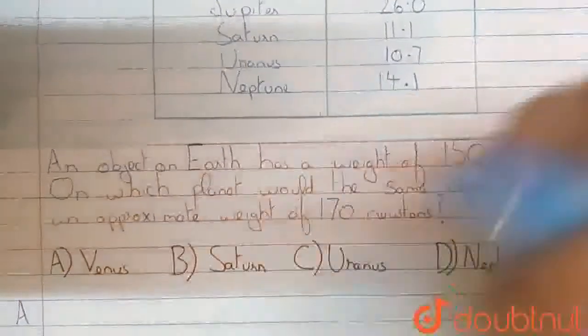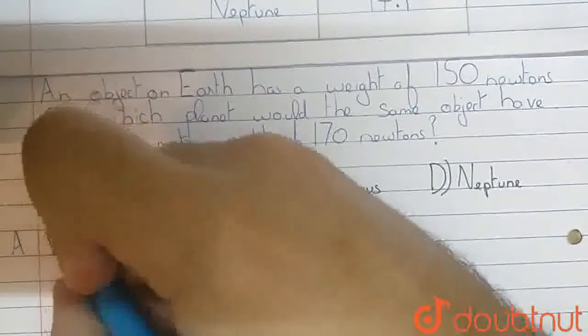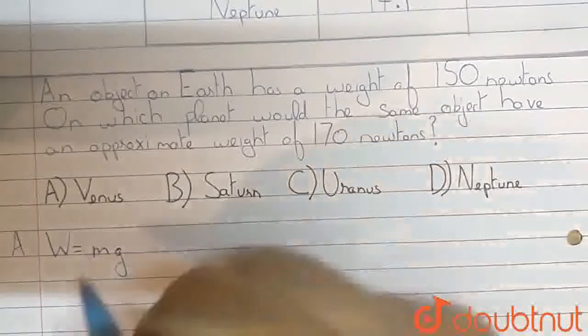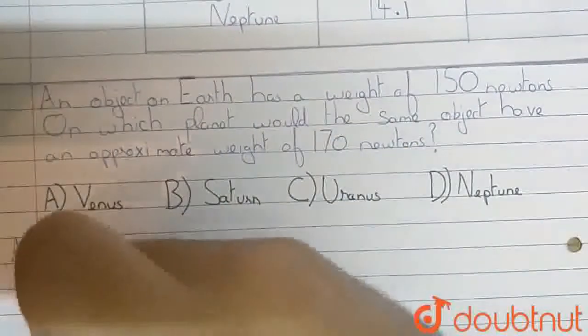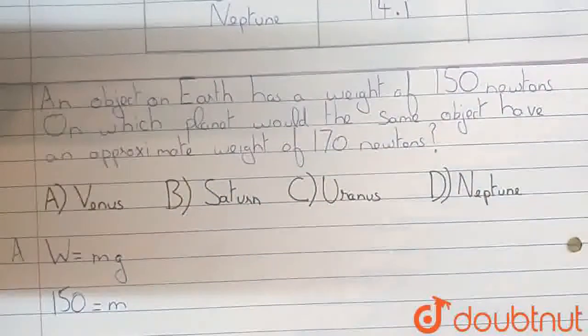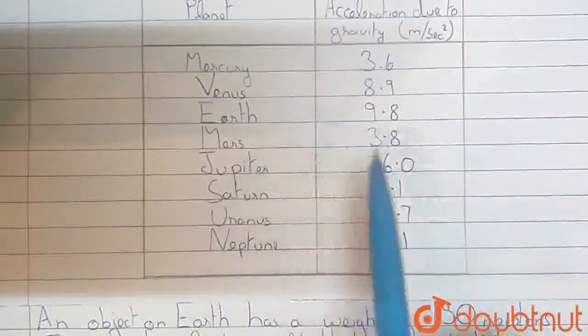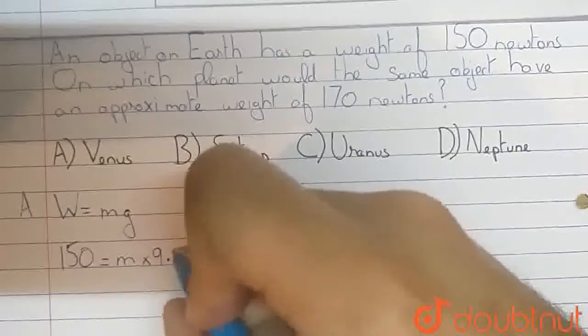So, in this entire question we will be using the formula w is equal to mg, which was given in the heading. We are told that an object on Earth has a weight of 150 newtons. So we know w is equal to 150, m is the mass that we are trying to find out, and g will be the value of acceleration due to gravity on Earth, which is given to us as 9.8. So this will be m into 9.8.